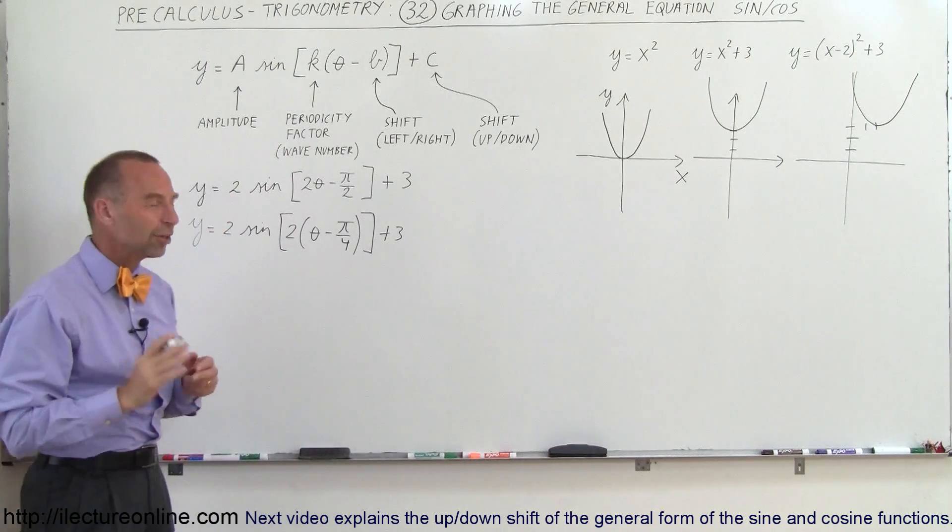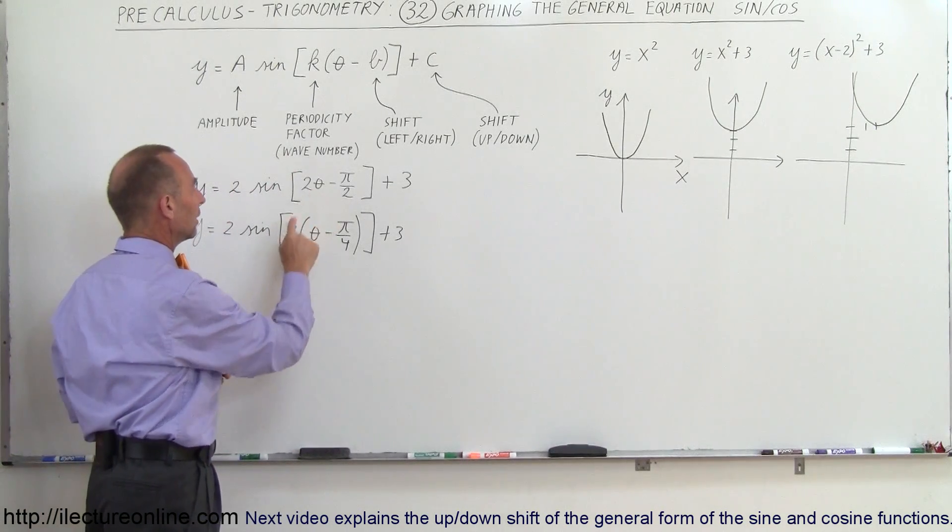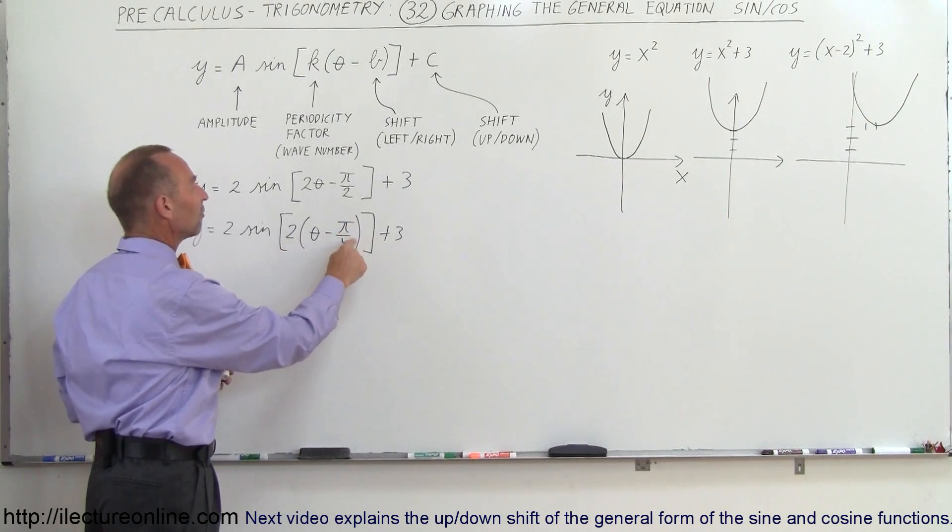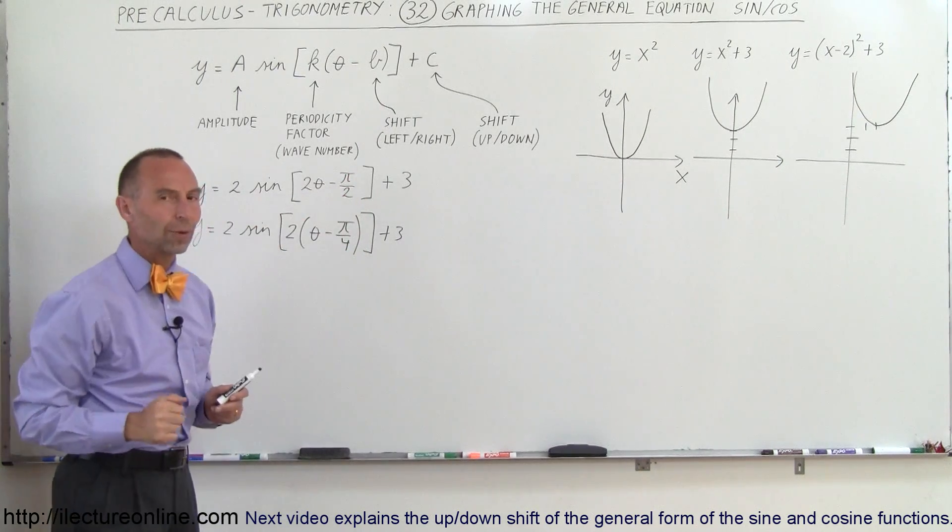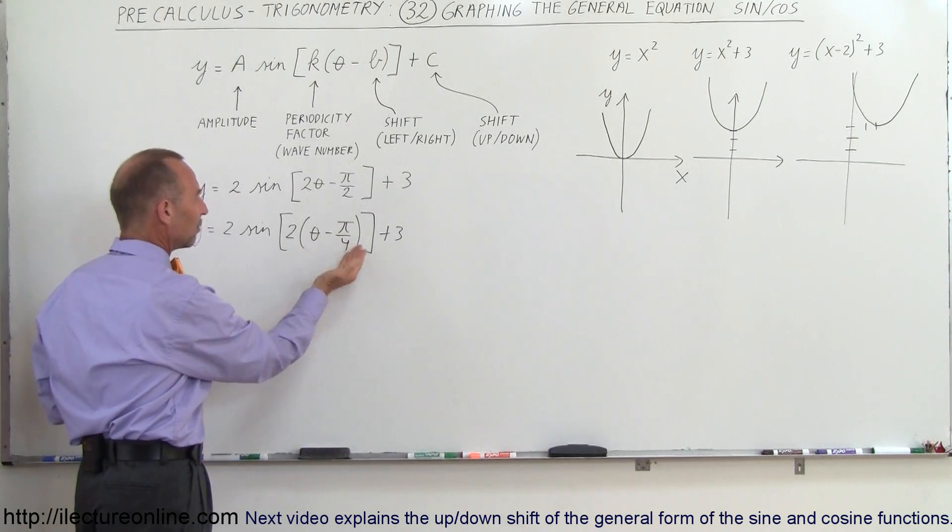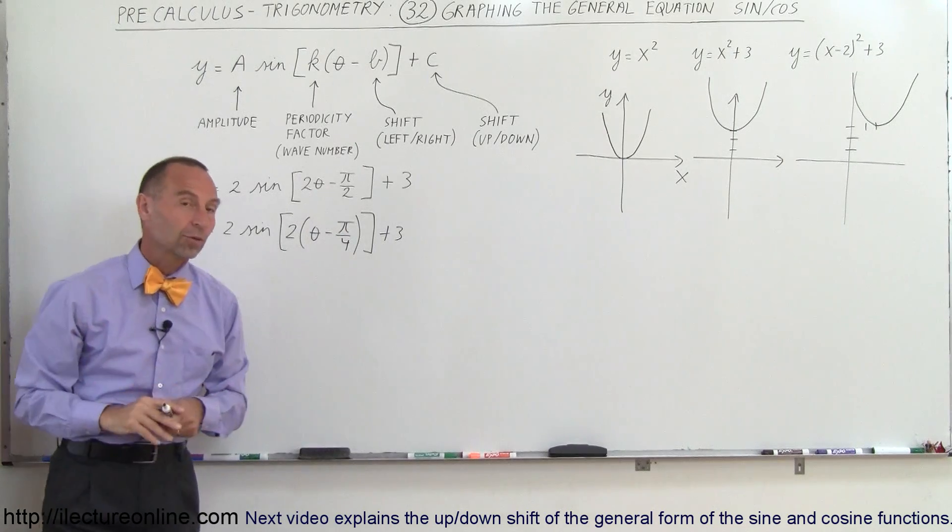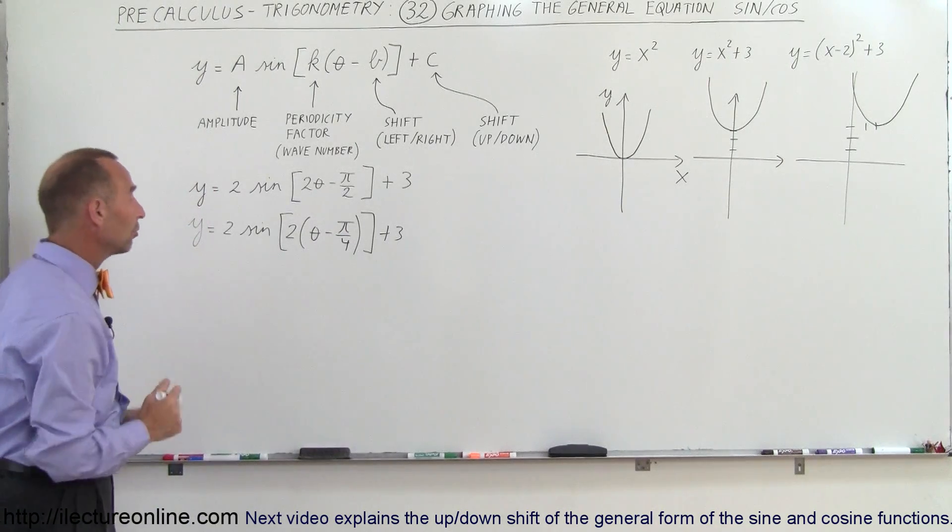Now you may say, well how do you know that? Well if you're not quite sure, multiply this back in. 2 times θ gives me 2θ and 2 times π over 4 gives you π over 2, so you know that you're correct. So the way I always check this is if I'm not quite sure what you're going to get when you factor out a number here, multiply back in, make sure you get back exactly what you started with. Alright, now we're ready to graph this.